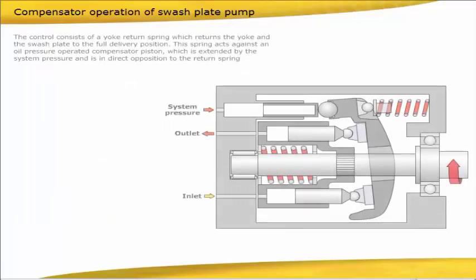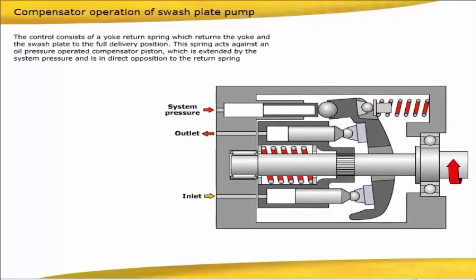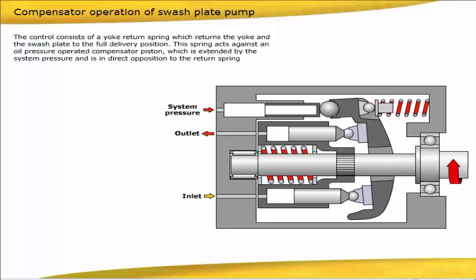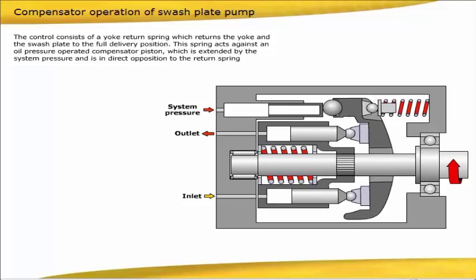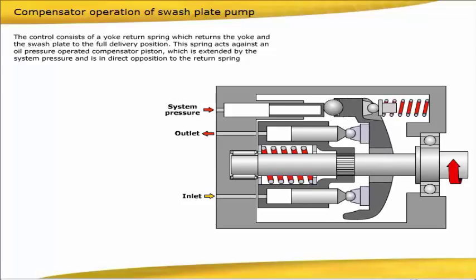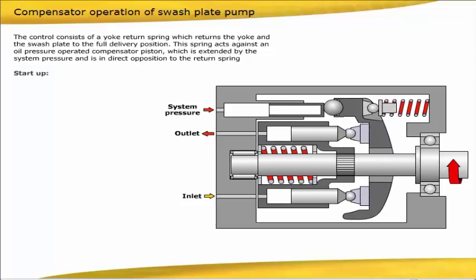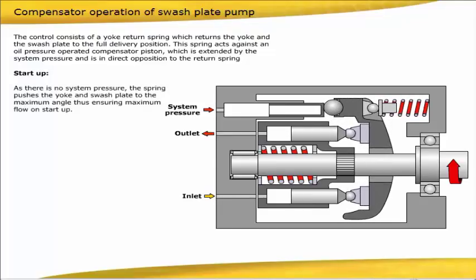The control consists of a yoke return spring, which returns the yoke and the swashplate to the full delivery position. This spring acts against an oil pressure operated compensator piston, which is extended by the system pressure and is in direct opposition to the return spring. At start-up, as there is no system pressure, the spring pushes the yoke and swashplate to the maximum angle, thus ensuring maximum flow on start-up.